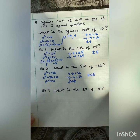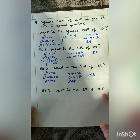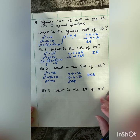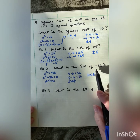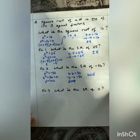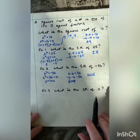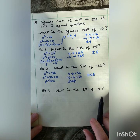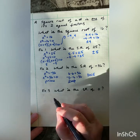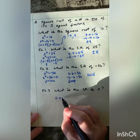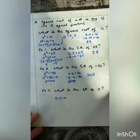Think about it. If you square a positive number, you'll always come up with a positive. If you square a negative number, two negatives give me a positive. So there is no way I can come up with that negative. And what is the square root of 0? Well, 0 times 0 equals 0, so the square root of 0 is 0.